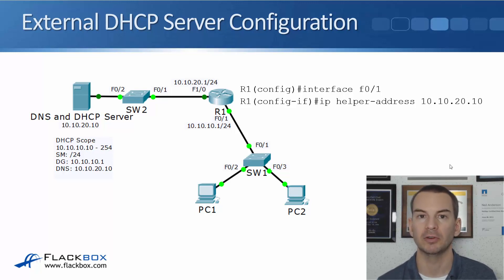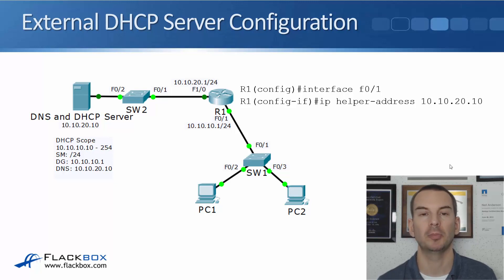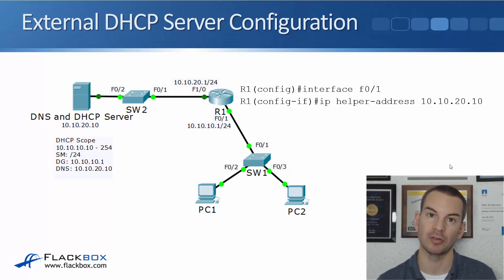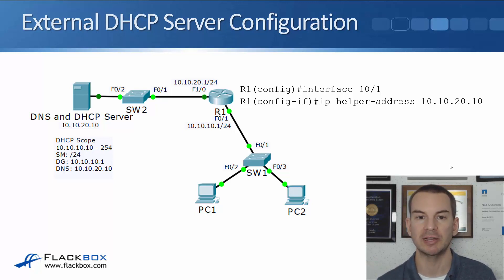The DNS server is 10.10.20.1. When the PCs send out a DHCP request, that goes out as broadcast traffic, so it will not be forwarded by the router by default. So on the router, I need to configure the IP helper address command on the interface that those requests come in on, and that forwards the requests to the DHCP server.